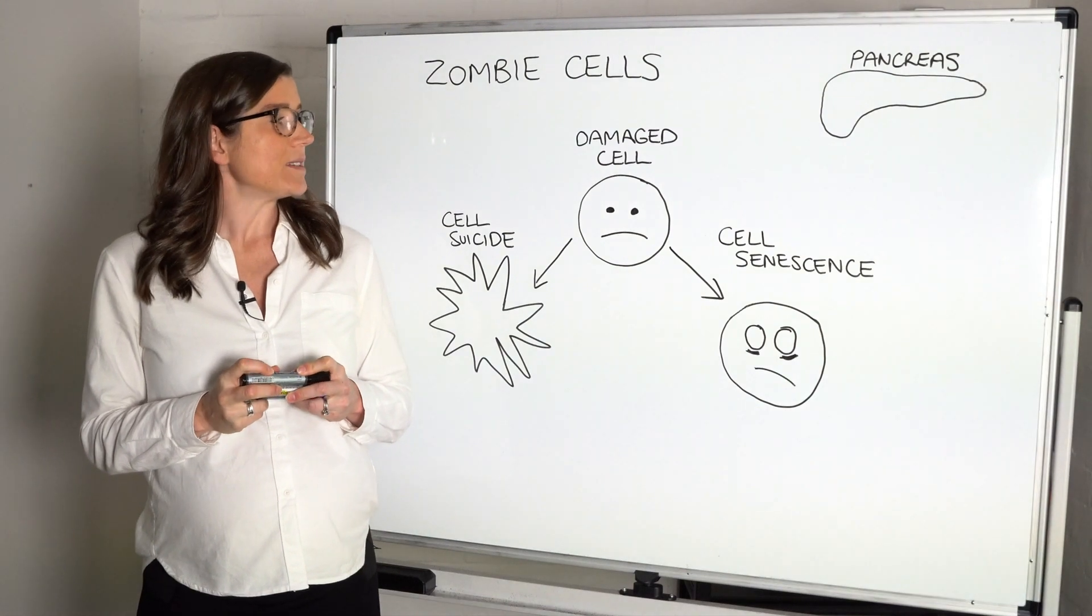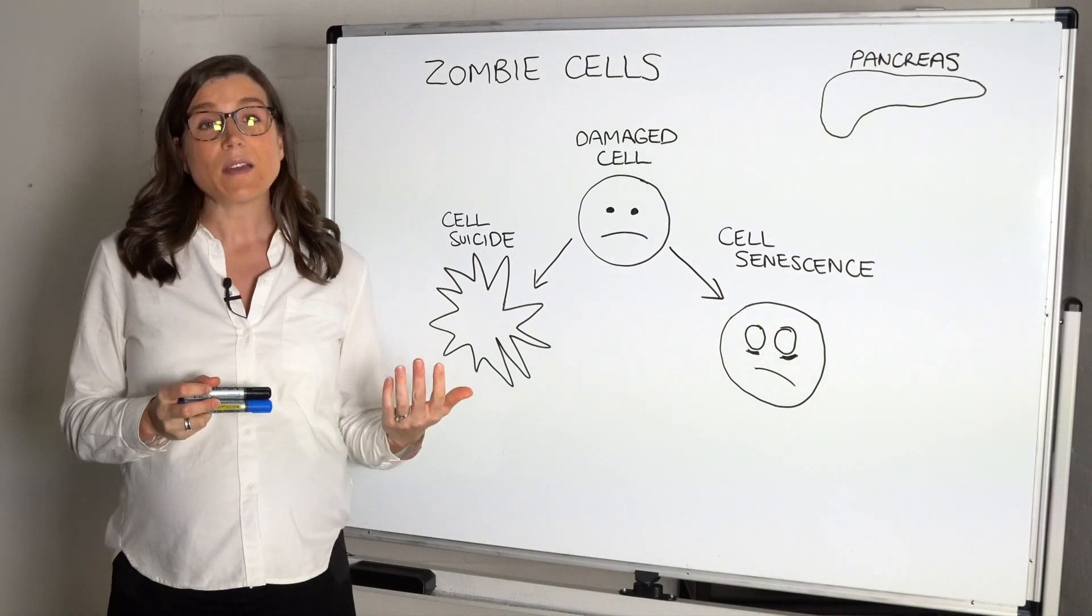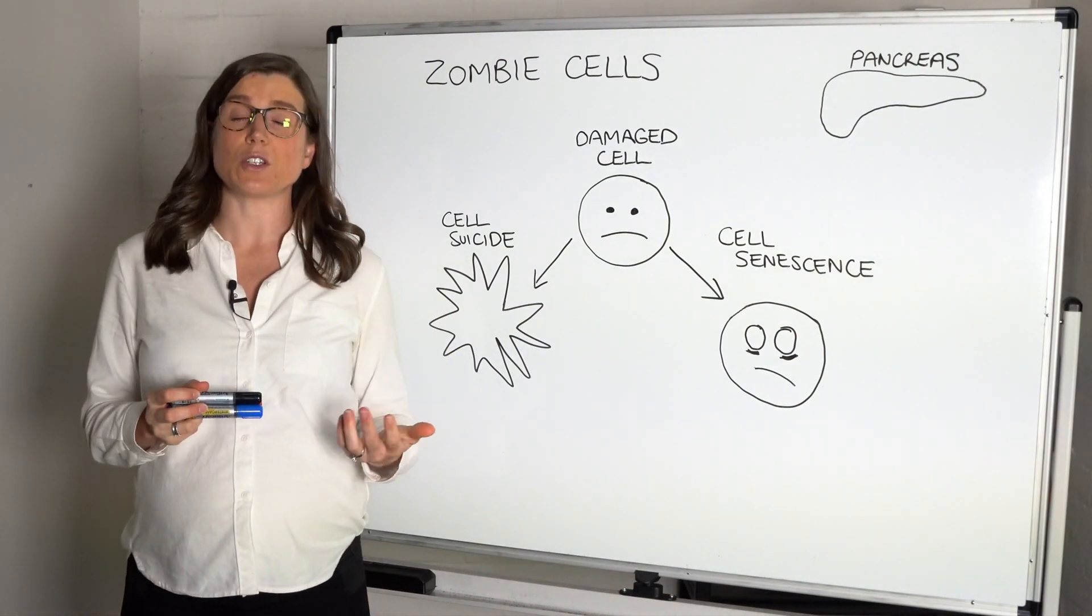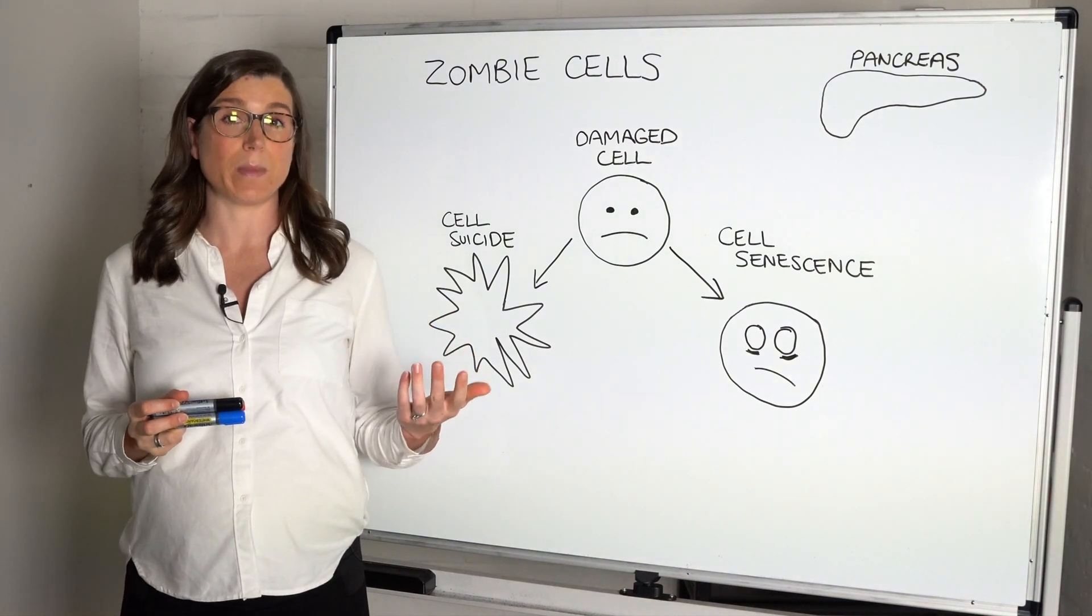When a cell is damaged, and the cell might be damaged from a poor lifestyle, poor diet, high blood sugars, or mitochondrial dysfunction, which is a big one in people with metabolic problems.